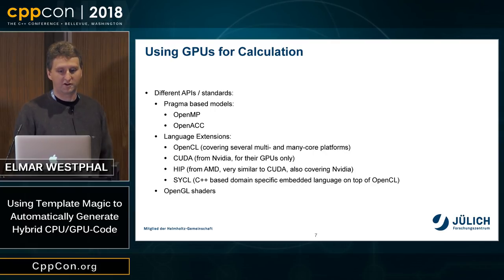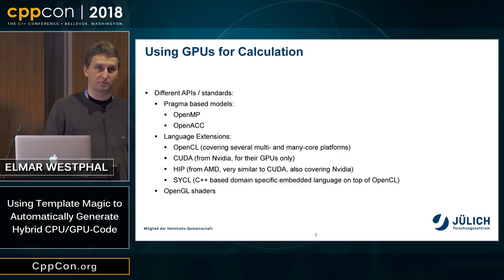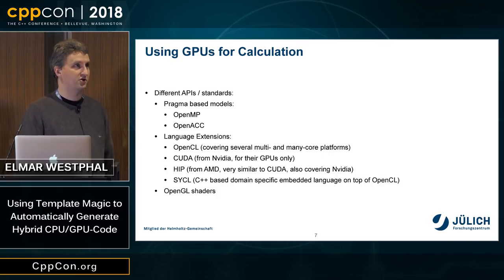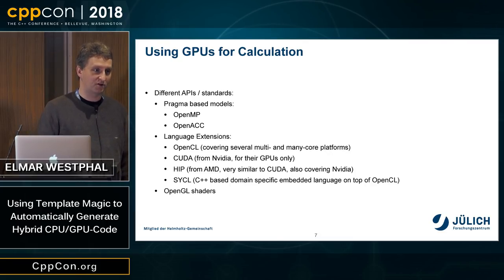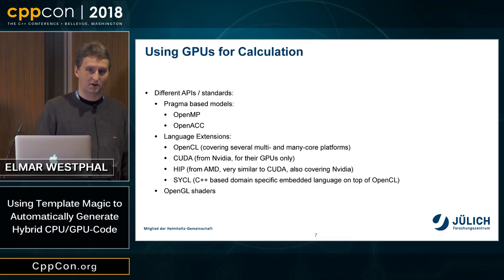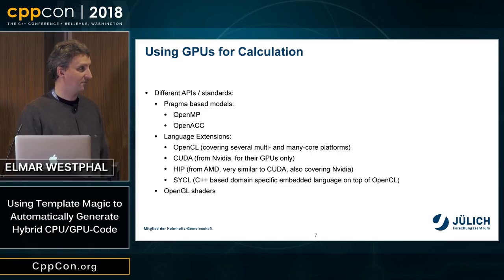To use GPUs for calculation, you can choose from different approaches. The easiest might be pragma-based models — newer versions of OpenMP support GPU computing, and similarly there is OpenACC. There are also language extensions: OpenCL, usable on many multi-core platforms; CUDA from NVIDIA, running mostly on their GPUs; and HIP, which is very similar to CUDA and can also compile to code running on NVIDIA devices. There is also SYCL, a domain-specific language on top of OpenCL, and for the hardcore, OpenGL shaders.